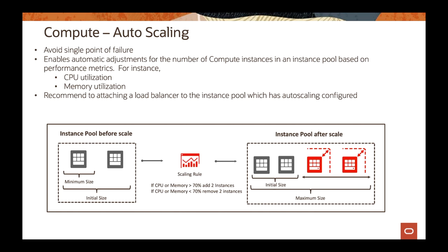Another important piece is auto scaling for compute. If you want to avoid a single point of failure, you may want to use auto scaling to make failover and high availability more automated. With auto scaling, you can use metrics to monitor CPU or memory utilization, and based on those performance metrics, take actions to increase the number of servers performing the same task in a pool, or decrease the number when utilization drops. It's up to you to define scale-in and scale-out thresholds, but auto scaling can help a lot when designing your application for HA.